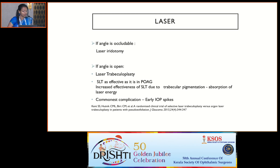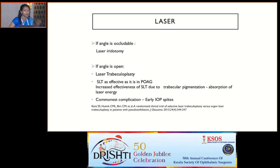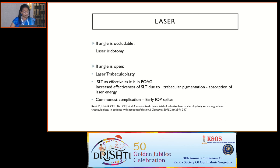Regarding the role of laser: if you have occludable angles, there is a role for laser iridotomy, though angle-closure mechanism is less common and may be due to zonular dialysis with anterior movement of the lens and increased lens thickness. When you have an open angle, selective laser trabeculoplasty is effective — possibly because of increased trabecular pigmentation and absorption of laser energy, as shown by the LIGHT study — though early IOP spikes are a common complication, and it is not as effective in Indian eyes compared to Caucasian eyes.